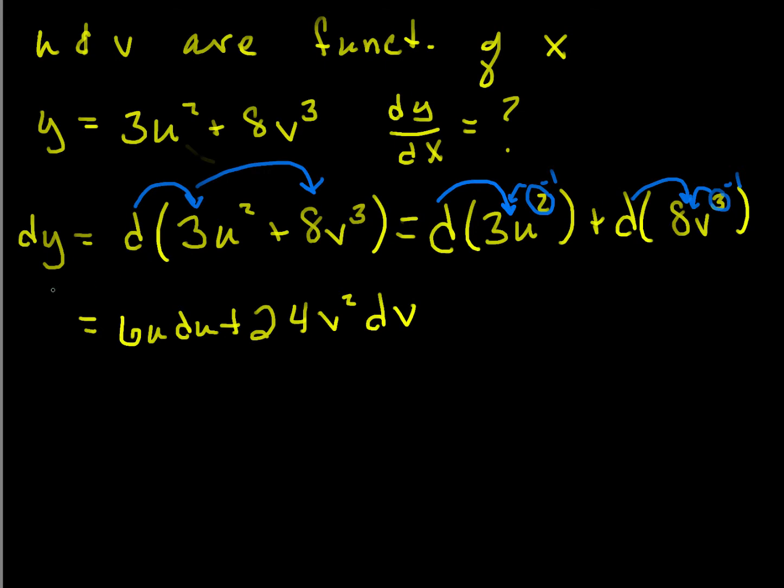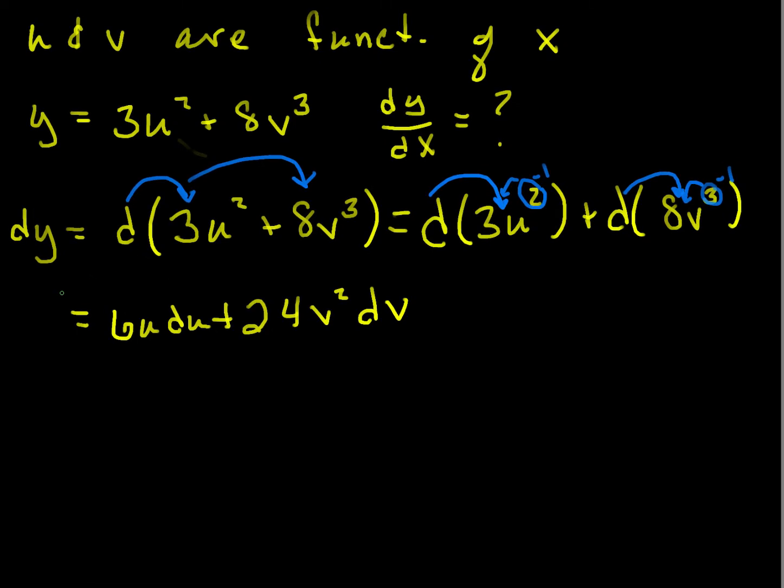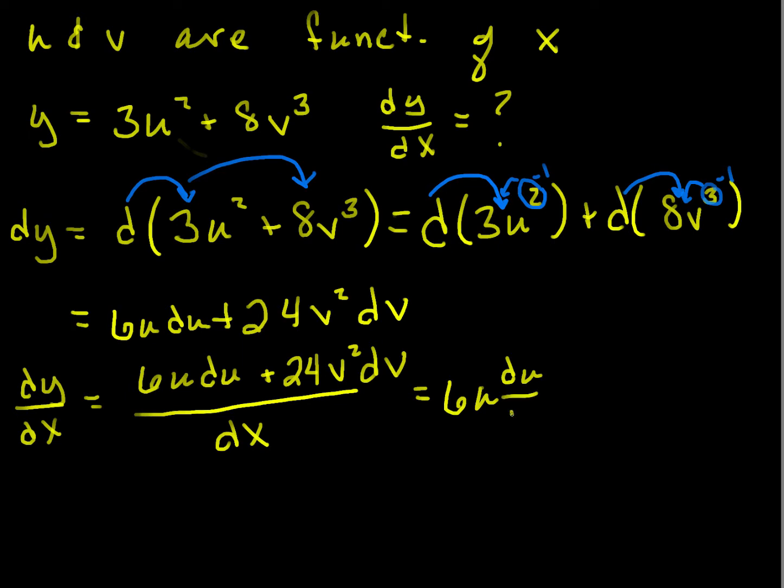Okay, so that's the differential of y with respect to u. So what is dy/dx? Well, we just divide by dx. So dy/dx is equal to 6u du plus 24v squared dv, all divided by dx. Or a more natural way to write this, when we break this up into two, and we get 6u du/dx plus 24v squared dv/dx.